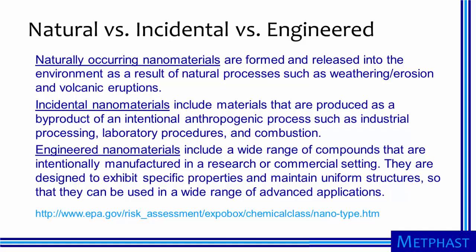The US Environmental Protection Agency has offered some definitions to distinguish among different kinds of nanomaterials for those who wish to call everything at the nanoscale a nanomaterial. The EPA suggests that naturally occurring nanomaterials are formed and released into the environment as a result of natural processes such as weathering, erosion, and volcanic eruptions. They consider incidental nanomaterials to include materials that are produced as a byproduct of an intentional anthropogenic process such as industrial processing, laboratory procedures, and combustion. For example, many particles produced by smoking tobacco or burning wood in fireplaces would be incidental nanomaterials.